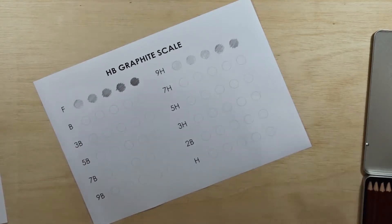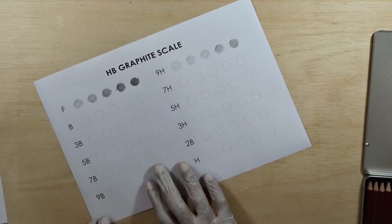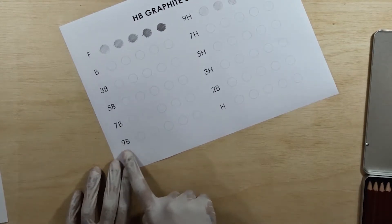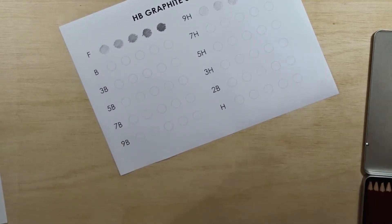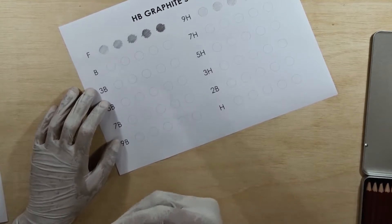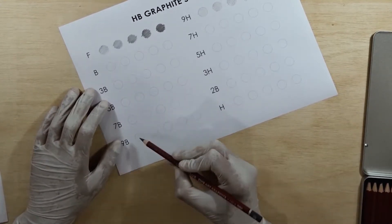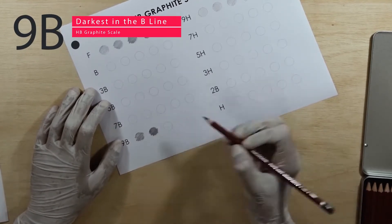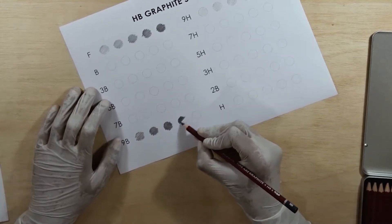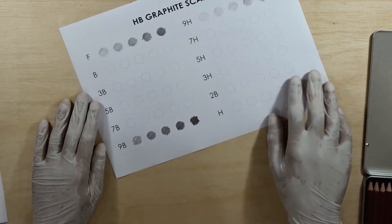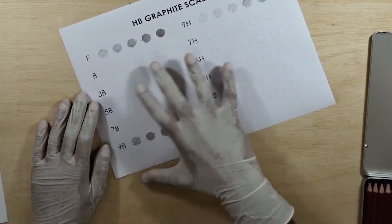Let me show you one more example. We will use a slightly difficult one, 9B. It's already a very black and dark pencil. You need to put very little bit pressure on the first one. So you saw how it works. That's the HB Graphite Scale and you need to fill out all the paper using the grading method I have told you.